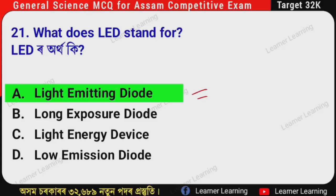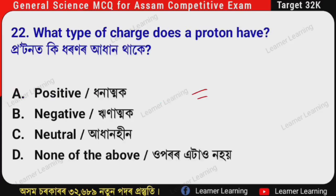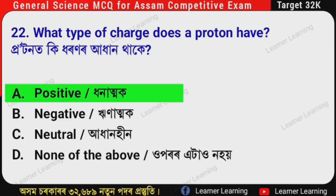Next question: What type of charge does a proton have? (Assamese: Proton at ki dharan ar adhan tha ki?) The correct option is Option A — Positive. A proton carries a positive charge.